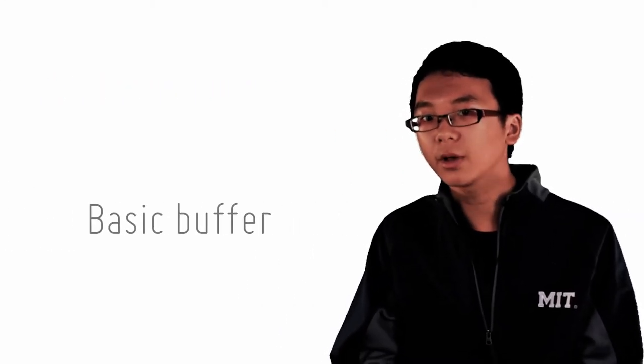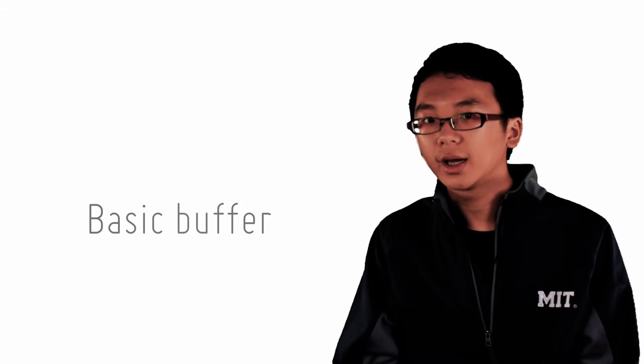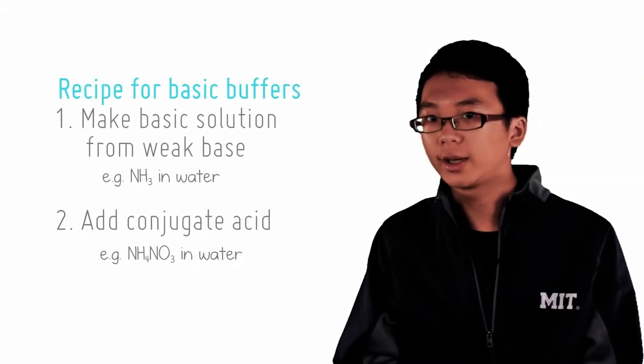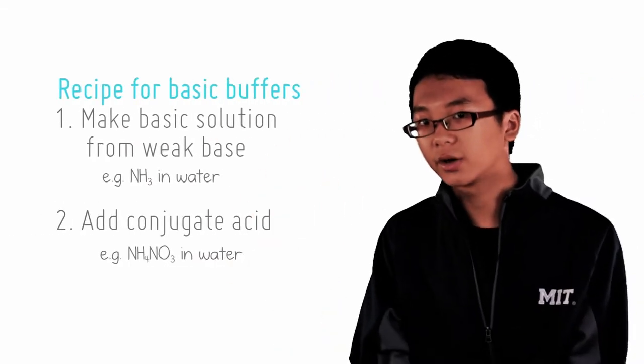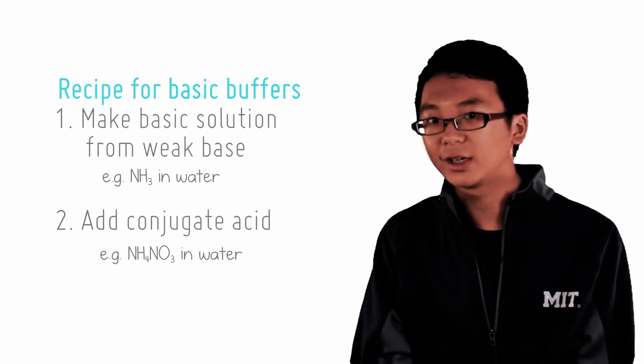For basic buffers, it is the same concept applied the other way. First, make the solution alkaline by using a weak base like ammonia. Next, add the salt of the conjugate acid, for example ammonium nitrate.